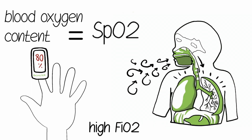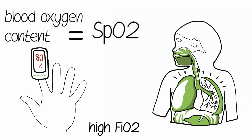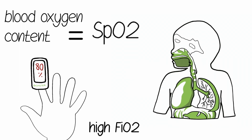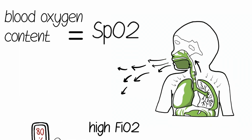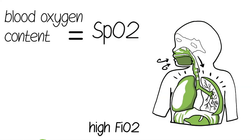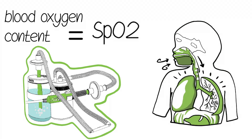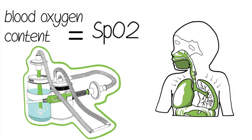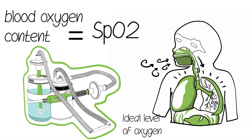However, too high of FiO2, like 100% oxygen, can cause vision and lung damage. The CPAP system allows the provider to control the FiO2 level, providing the patient with air containing ideal levels of oxygen to help the body function normally.